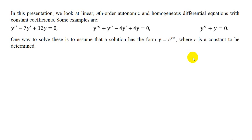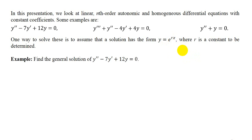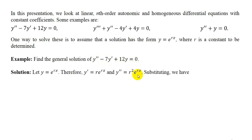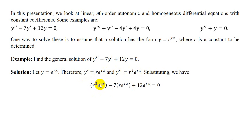One way to solve these equations is to assume that a solution has the form y = e^(rx), where r is a constant to be determined. Let's find the general solution of y'' - 7y' + 12y = 0. Let y = e^(rx). Therefore, y' = r·e^(rx), and y'' = r²·e^(rx). Substituting, we get: r²·e^(rx) - 7r·e^(rx) + 12·e^(rx) = 0.